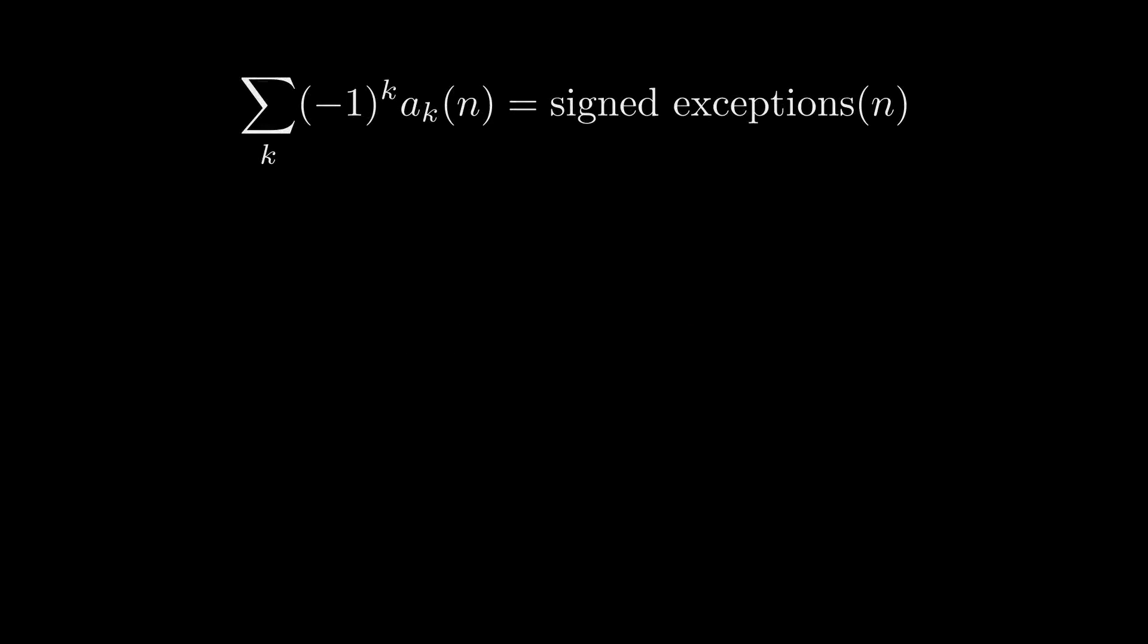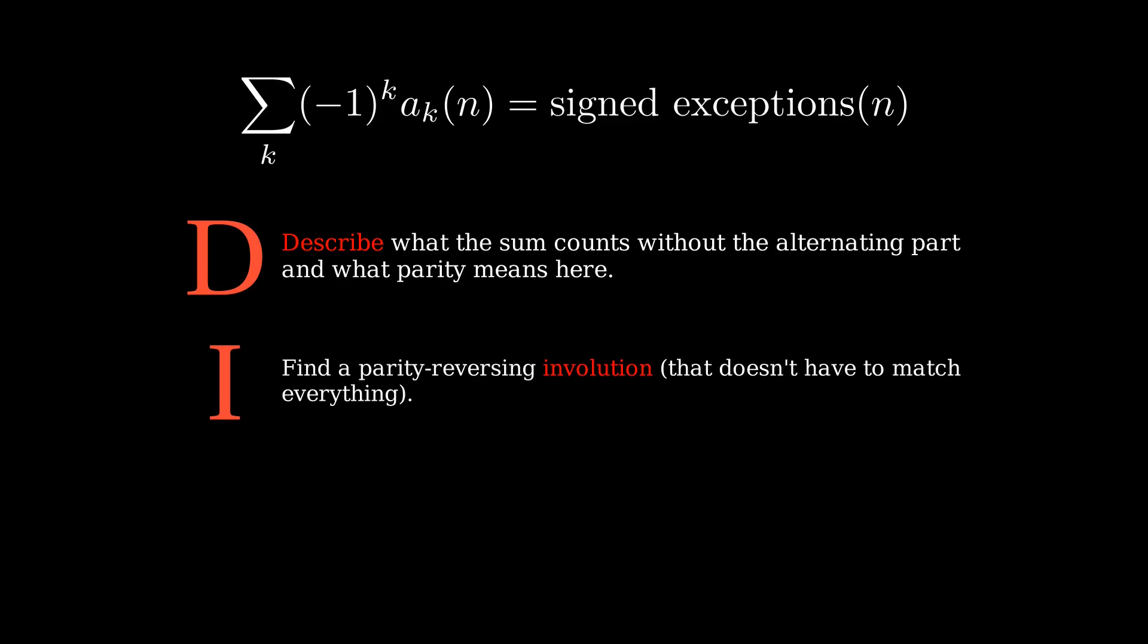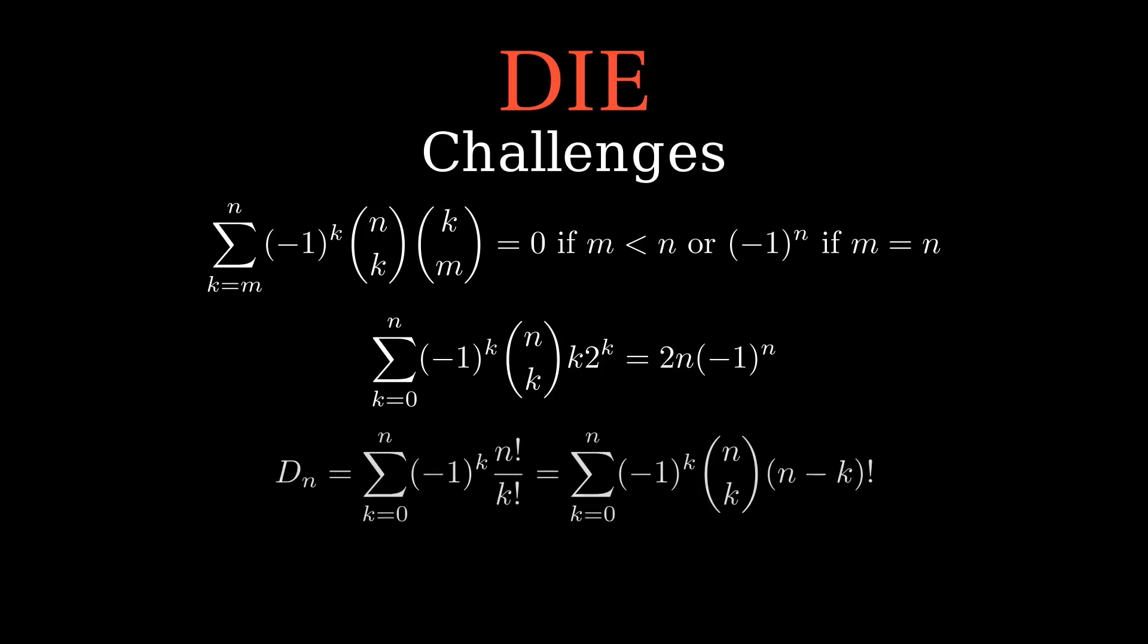That's everything for this video. Remember the DIE method. First describe what the sum counts without the alternating part, and what parity means. Next, find a parity reversing involution. It doesn't have to be perfect, but making it as good as possible helps. And last, count the involution's exceptions, paying attention to their parity. Once you try out a few of these, you'll be hooked. Matching is way easier than counting. So here are some challenge problems for you to try out the DIE technique. The d sub n in that last one is the number of derangements of n things. If you don't know what that is, I've got a couple other videos to introduce you to.